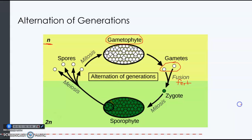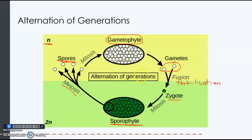Since the gametes — sperm and egg — are haploid, the zygote is diploid, meaning it contains two copies of the chromosomes: one from the sperm and one from the egg. The zygote will divide and become a multicellular sporophyte, and all the cells in the sporophyte are diploid. When the sporophyte cells undergo meiosis they become haploid spores. The spores will then undergo mitosis and germinate, growing into a haploid gametophyte structure.